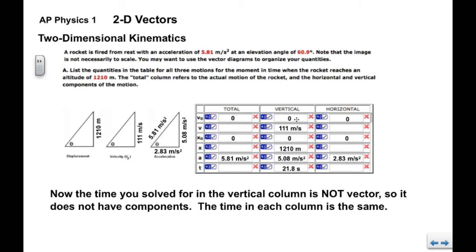Now, the time that you solved for using kinematics in the vertical column, this is not a vector. So, time does not have vector components. There's only one rocket and we're breaking up its motion into horizontal and vertical, but the time in each column is the same. So, we can take that time, put it right here, put it right here.